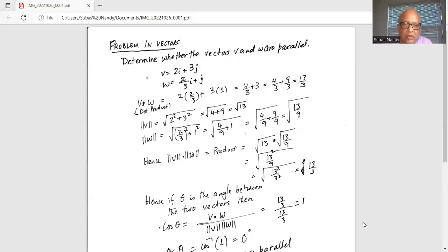And magnitude of w is square root of (2/3) squared plus 1 squared, which is square root of 4/9 plus 1. 1 can be written as 9/9. So it is 4/9 plus 9/9, which is 13/9. Hence the product of the magnitudes of v and w is square root of 13 times square root of 13/9, which is square root of 13 squared divided by 3 squared, equals 13/3.